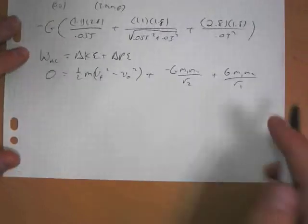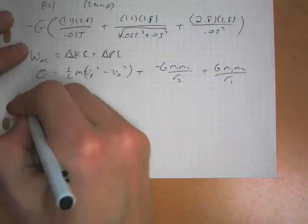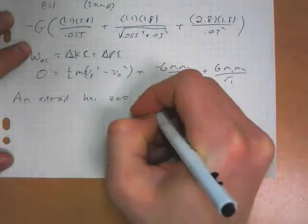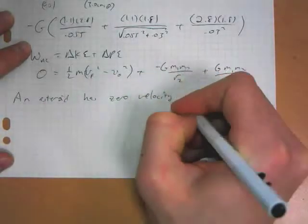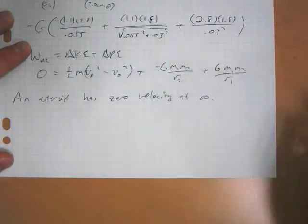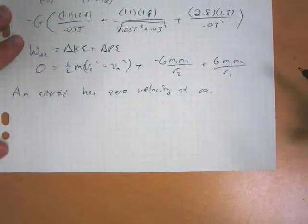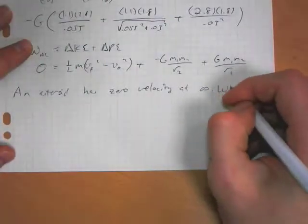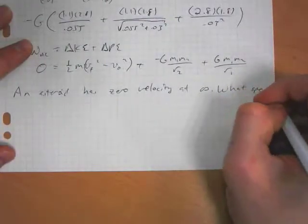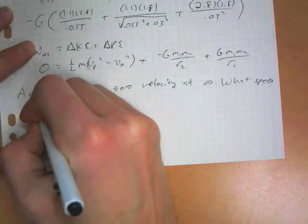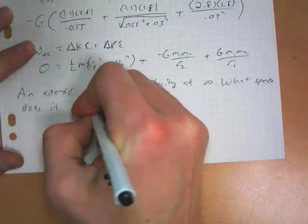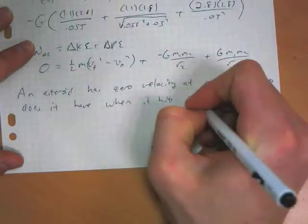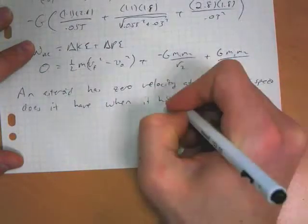Let's say, for example, an asteroid has zero velocity at infinity, an infinitely large, really large distance away from Earth. And then it hits Earth. So what speed does it have when it hits Earth?